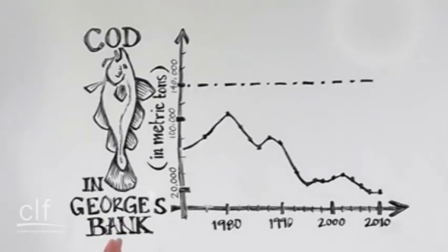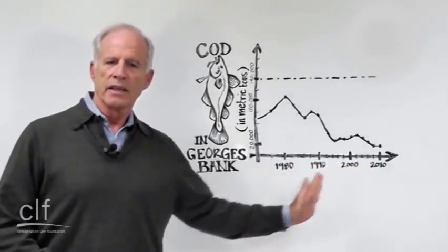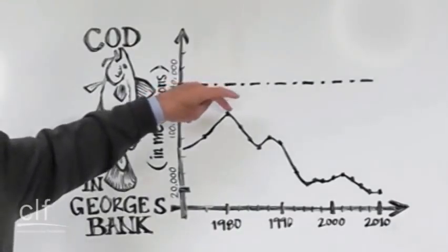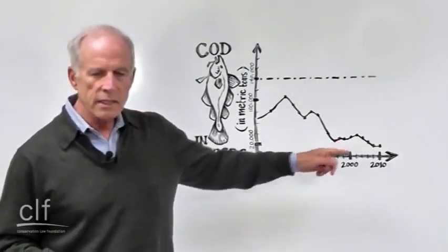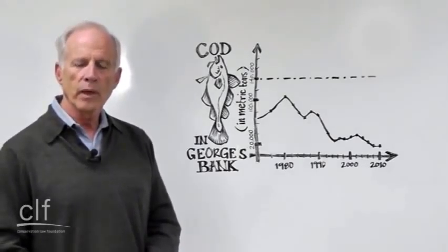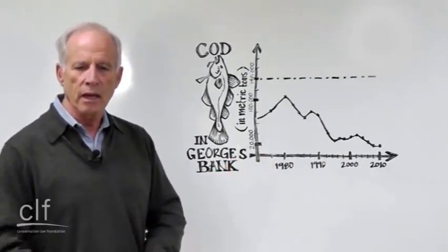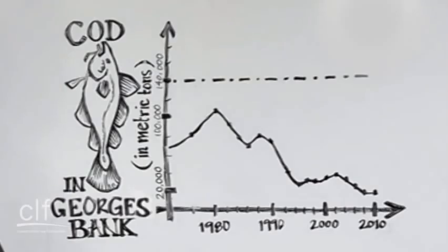On this axis is the amount of fish by weight and on this axis is the timeline. From the early 80s down to 1994 we have the collapse of Atlantic codfish from overfishing. People were killing more fish than the fish could produce.